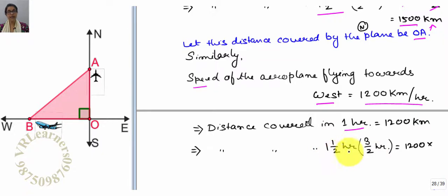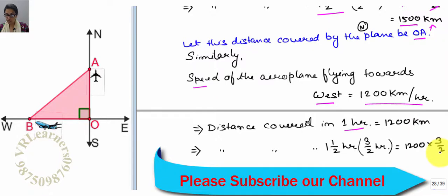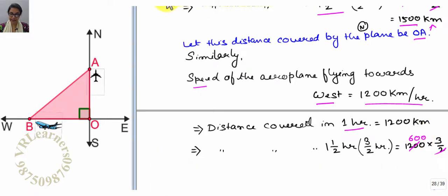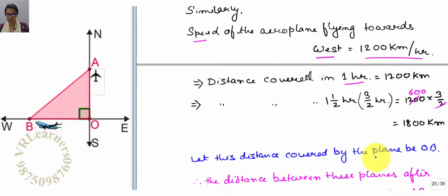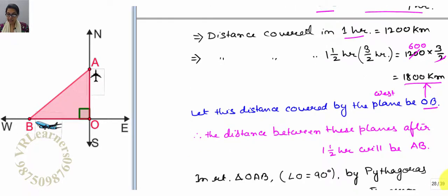Similarly one and half convert 3 by 2, so multiply 3 by 2. Now if 2 cancel then this is 600, so I can write this as multiply, I get 1800 km. So now let the distance covered by the plane west be OB, and this one and half hour distance will be 1800 km.